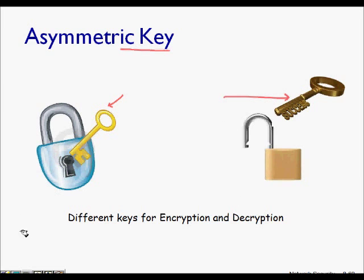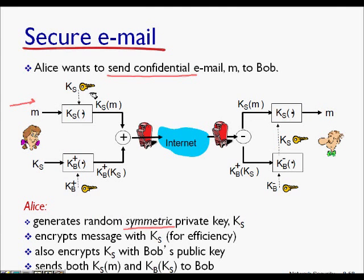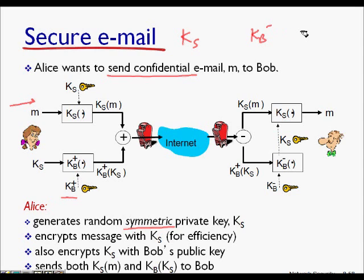Message M is the email. KS is the symmetric key shared between Alice and Bob. Alice also has a public key and private key. Bob has his private key KB- and his public key KB+. The public key KB+ is used for encrypting and KB- is used by Bob for decryption.